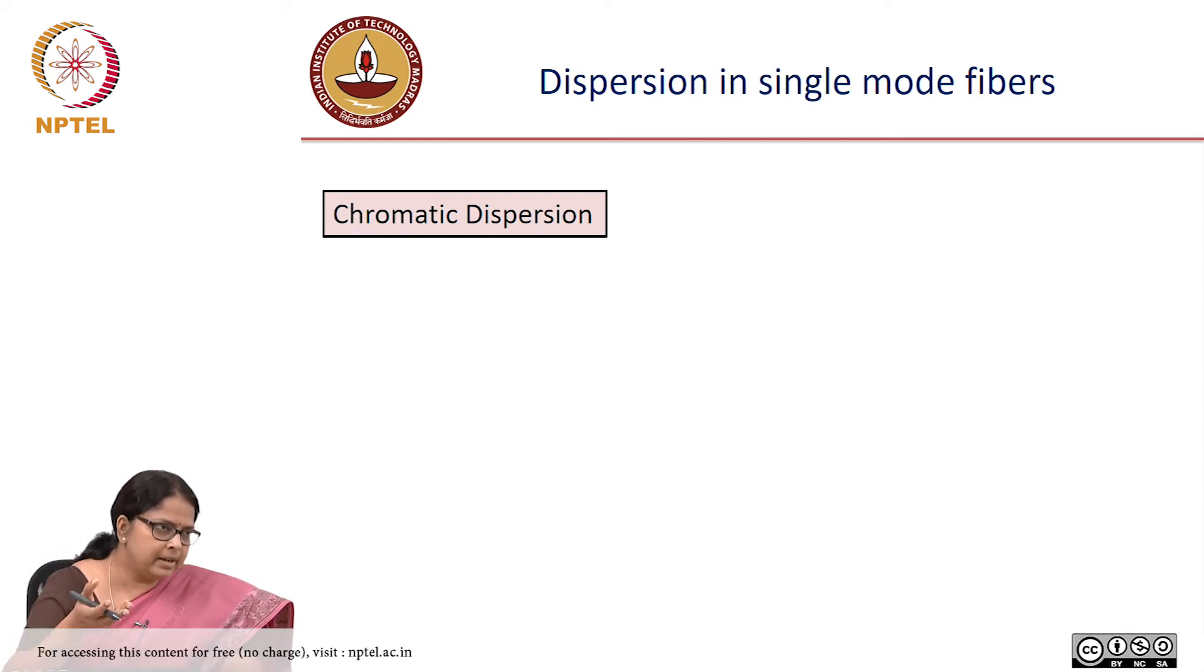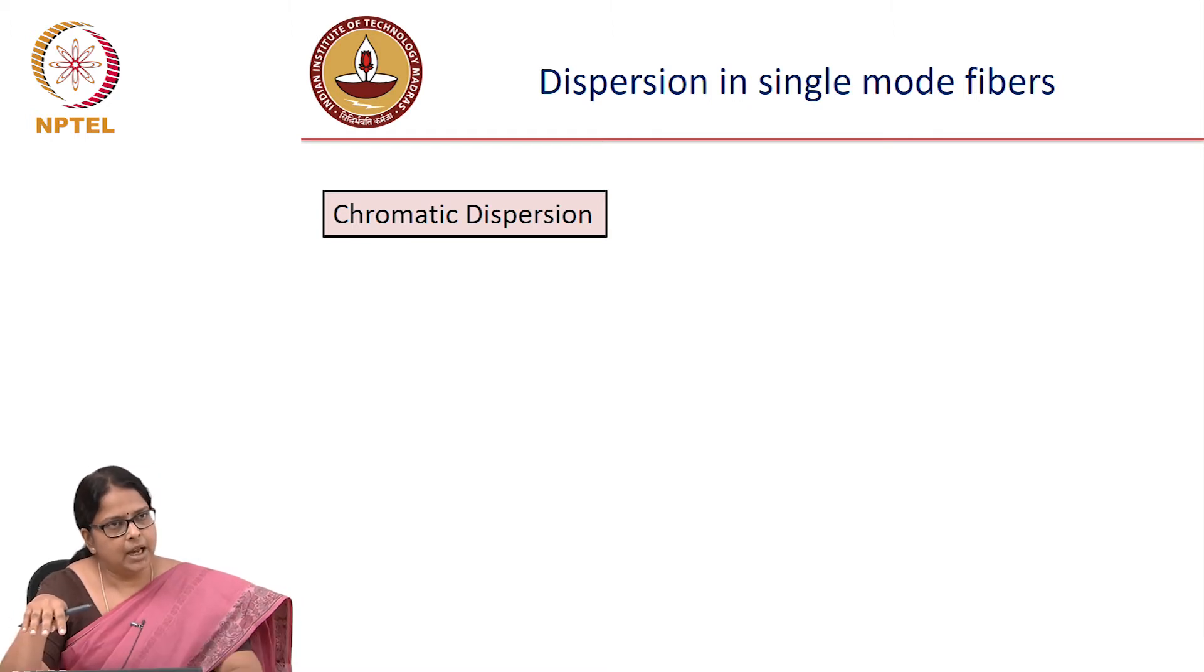If I put independent information on different modes, then how is it a problem? If I put independent information on different modes and if I have a situation where I have hundreds of modes and I have independent information on hundreds of modes, they will all mix together, they will arrive at different times, they will also mix together.